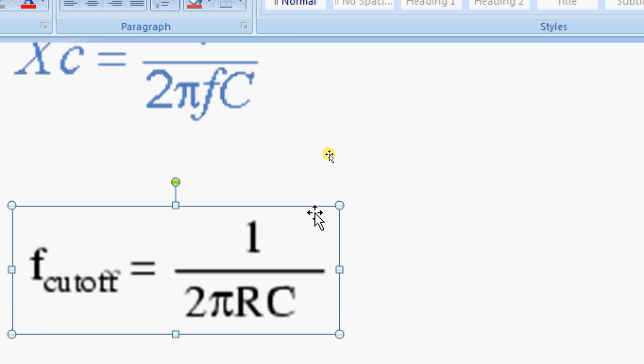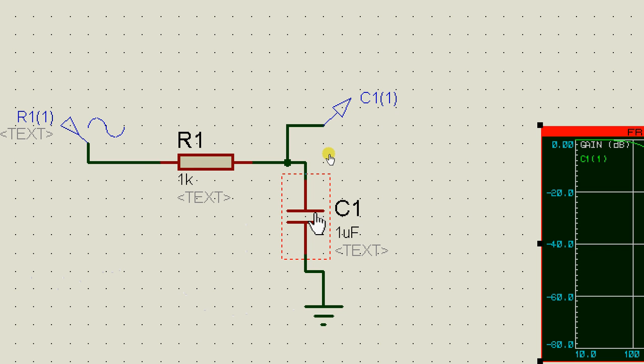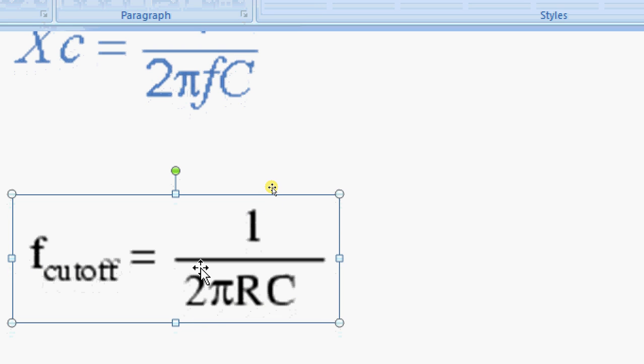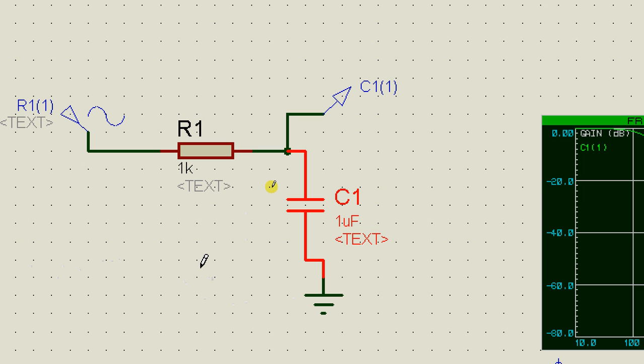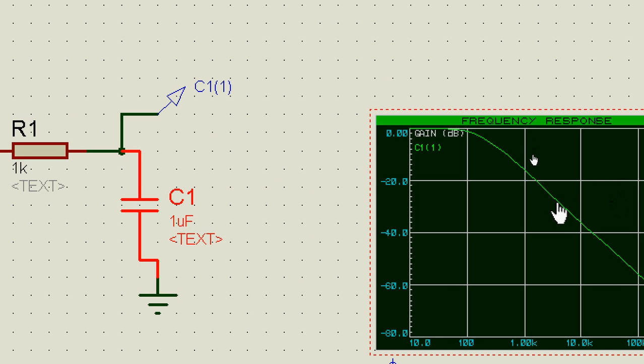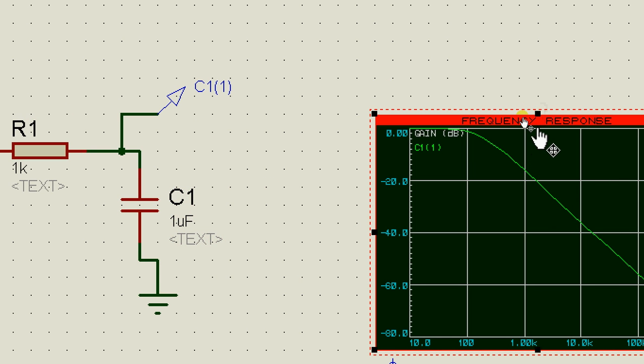And in order to determine that frequency there's another formula and that is f_cutoff = 1/(2πRC). Now in my circuit I have chosen R equals 1 kilo ohm and C equals 1 micro farad, so if you substitute these values in this formula you're going to get f_cutoff equals 160 hertz.